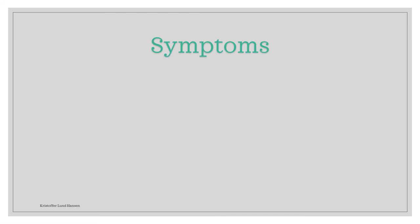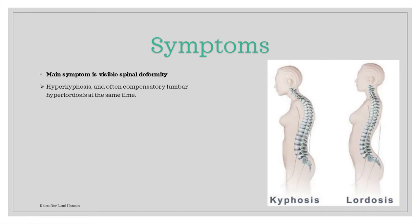And now to the symptoms. As you can expect, the main symptom of the disease is hyperkyphosis, which gives a more rounded appearance of the upper back. There is at the same time often also compensatory lordosis of the lumbar region. Pain is unfortunately not a good symptom to look for in this disease. The disease can cause pain in the thoracic and/or the lumbar region of the back, but many patients are pain free.